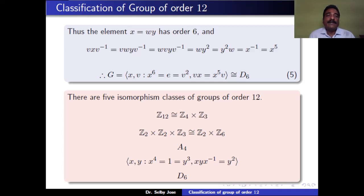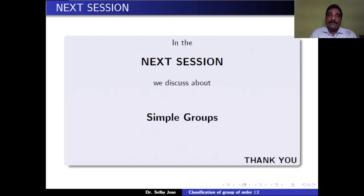In all, there are 5 isomorphism classes of groups of order 12: Z12 (≅ Z4 × Z3), Z2 × Z6 (≅ Z2 × Z2 × Z3), A4, the group ⟨X, Y | X⁴=1, Y³=1, XYX⁻¹=Y²⟩, and D6. The first two are abelian and the last three are non-abelian. In the next session we discuss the symmetric groups. Thank you.